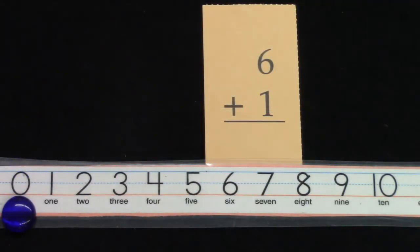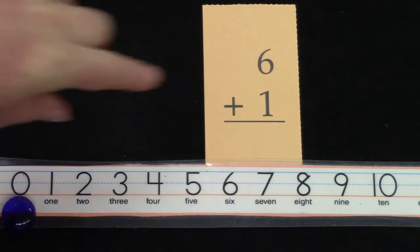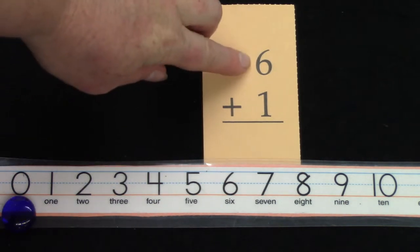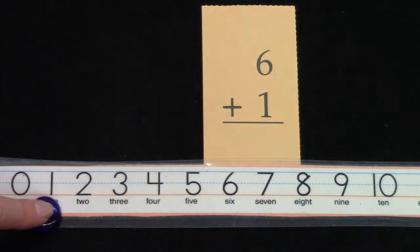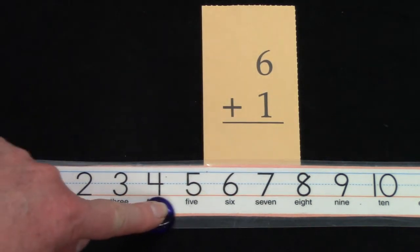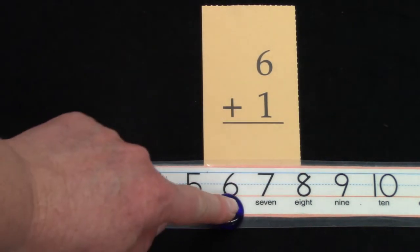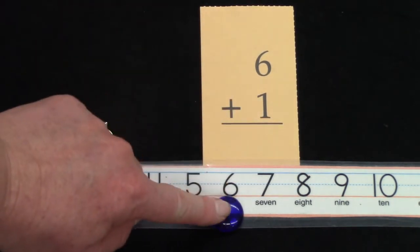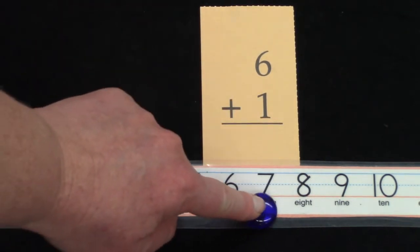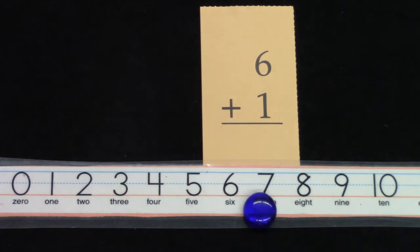Let's try some plus 1 addition. We're going to use our number line. We're going to do 6 steps: 1, 2, 3, 4, 5, 6. Plus how many more steps? 1. 6 plus 1 equals 7.